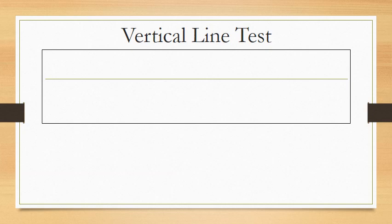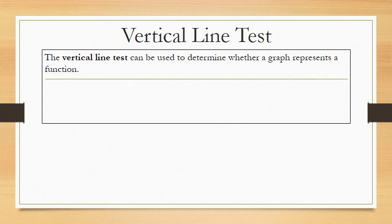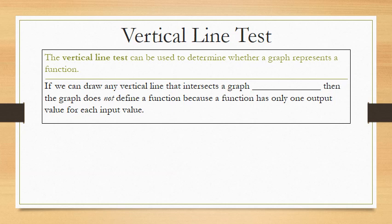Let's begin with the vertical line test. The vertical line test can be used to determine whether a graph represents a function. If we can draw any vertical line that intersects a graph in more than one place, then the graph does not define a function because a function has only one output value for each input value.